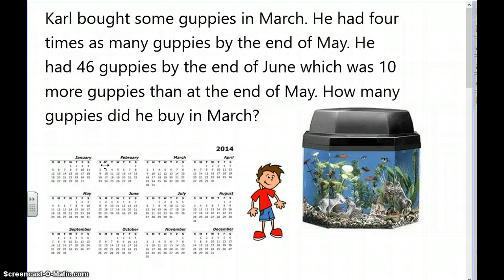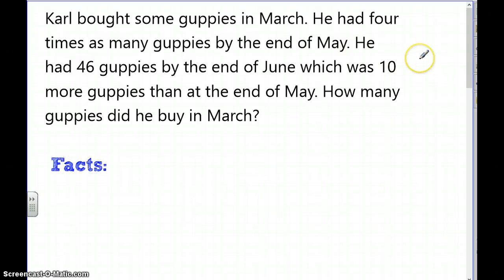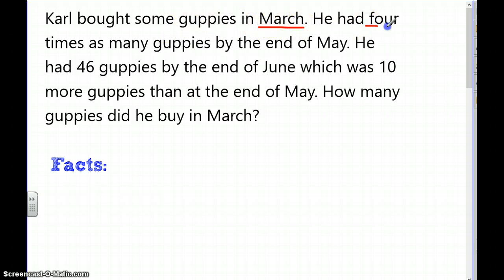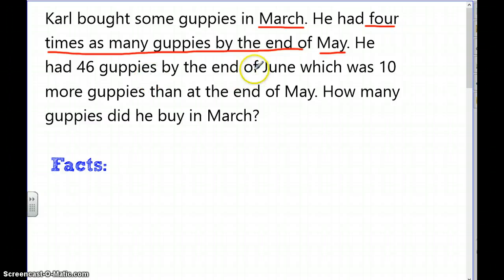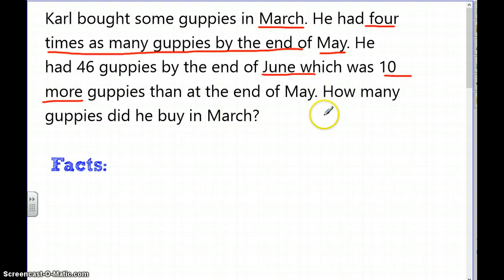That strategy of visualizing can be very helpful. Now I'm going to underline some keywords: he bought guppies in March, he had four times as many guppies by the end of May, he had 46 guppies at the end of June, which was ten more than at the end of May.